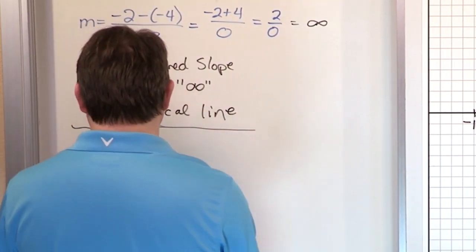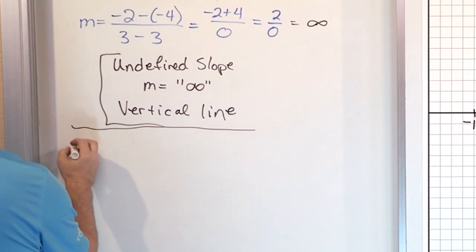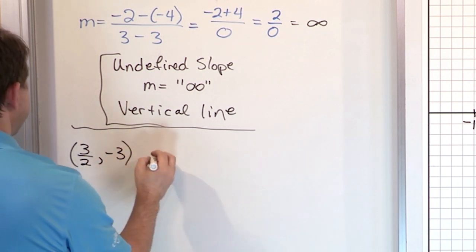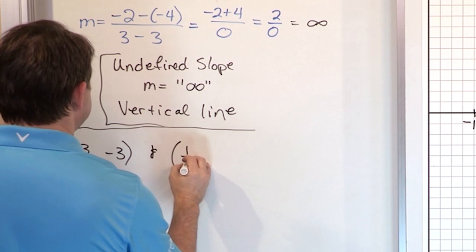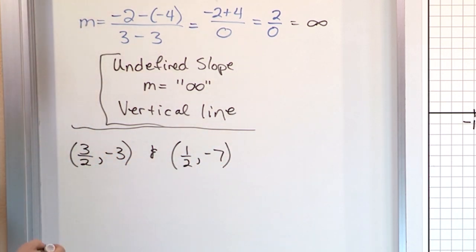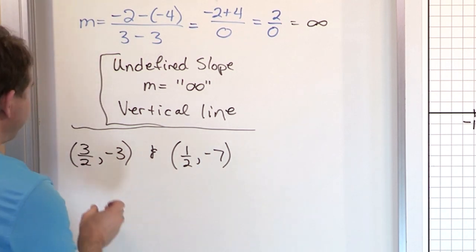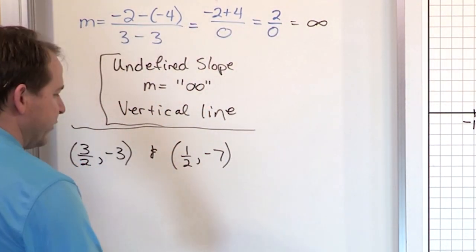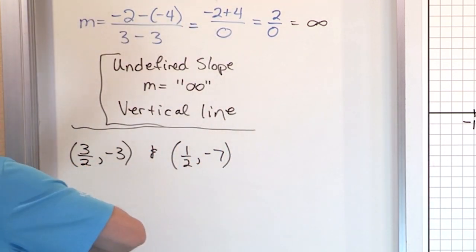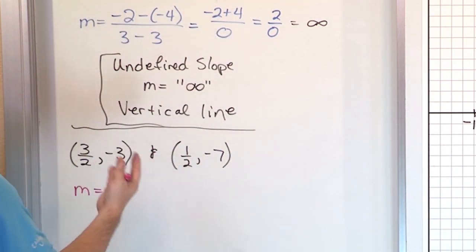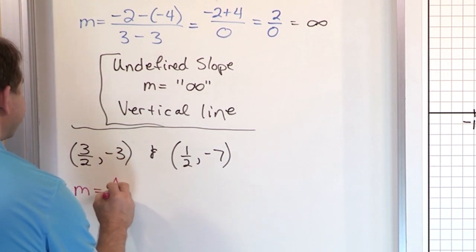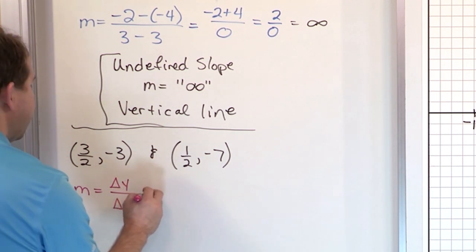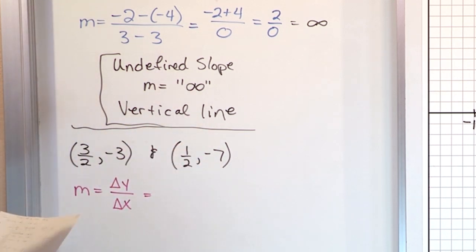Now I want to talk about what happens when you have fractional coordinates: the point (3/2, -3) and the point (1/2, -7). The calculation is exactly the same, but fractions make a lot of people nervous. Let's take it one step at a time. The slope is delta y over delta x — change in y values divided by change in x values — and it doesn't matter which way you subtract as long as you're consistent.